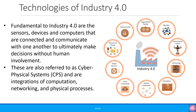Coming back to Industry 4.0, let's look at the technologies that make it possible. Fundamental to Industry 4.0 are the sensors, devices and computers that are connected and communicate with one another to ultimately make decisions without human involvement. These are referred to as cyber physical systems (CPS), and are integrations of computation, networking and physical processes. On the right hand side you will see a combination of cyber physical systems, the industrial Internet of Things, and cybersecurity.